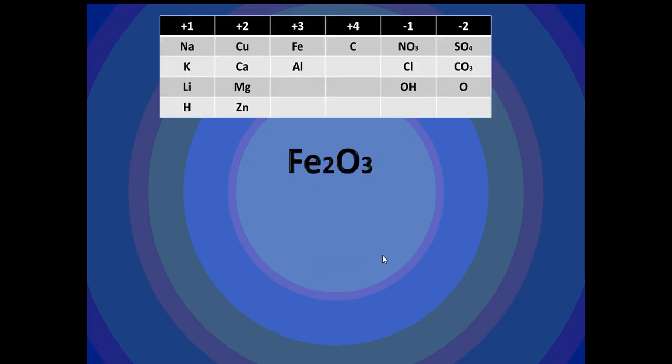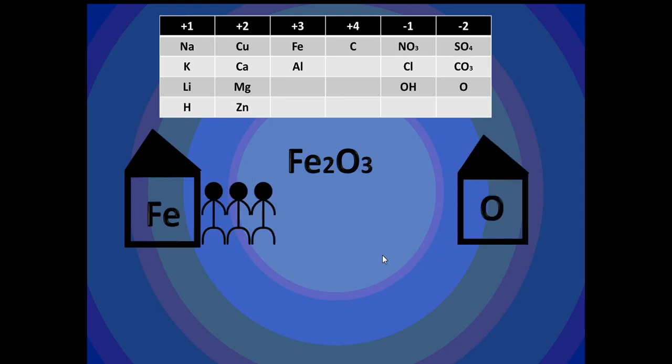Next thing we're going to do is Iron Oxide, written like that. So in the house of Iron, we have three dudes. In the house of Oxide, we have two girls. So what will happen is, we have one bachelor. We can't split the house in two.